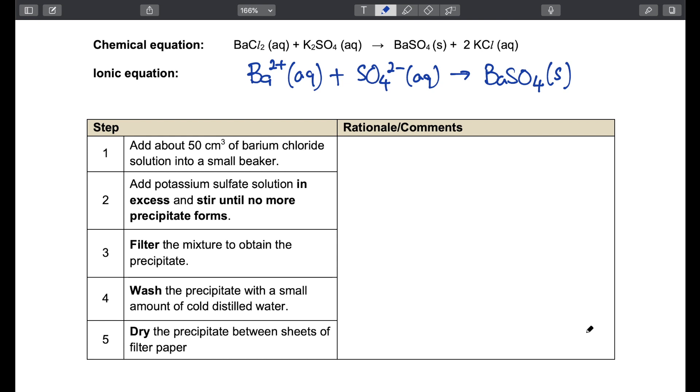Now we go over the procedure of how to carry out precipitation reaction. We start by adding about 50 cm³ of barium chloride solution into a small beaker. This volume doesn't really matter. We will mix our second solution in, in excess, and stir until no more precipitate form. This is to ensure all the barium chloride is reacted. It doesn't matter which one we add to which, we can reverse the order. It's perfectly okay.